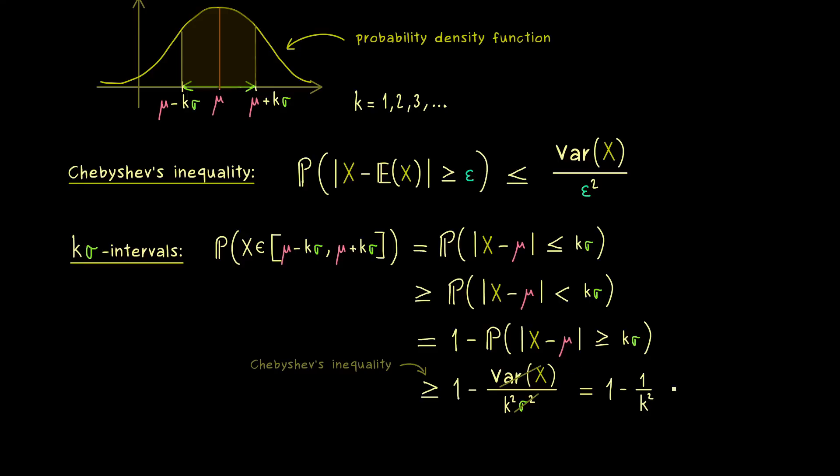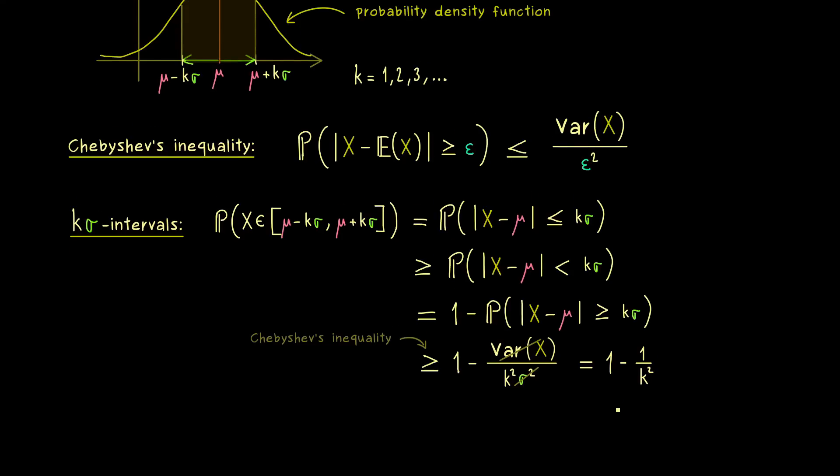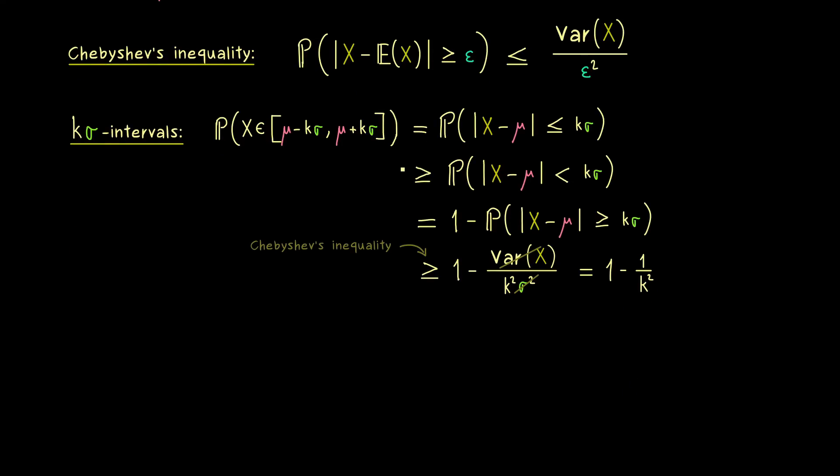So sadly, this estimate does not help for the case k equals 1. However, for all other cases, we get a positive number here on the right hand side. So it tells us something for this probability. For example, for k equals 2, we have that 1 over k squared is 1 quarter. Hence, the probability of our 2 sigma interval here is greater or equal than 75%. And again, please note, this is a general result. It holds no matter which distribution we have for the random variable X.